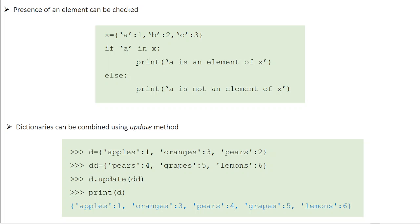These are some of the basic operations with tuples and dictionaries, which are very specific to the Python programming language. It's good to get familiarized with all these basic tools, as you may use them somewhere in your programming. In the next class, we will talk about one of the most important operations in any programming language — file operations. Thank you.